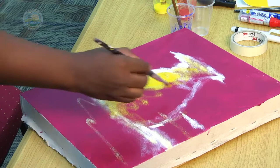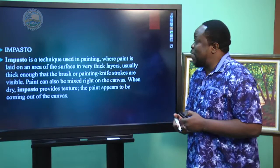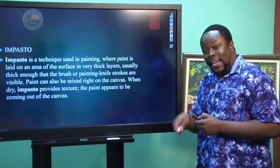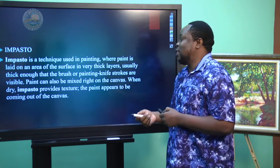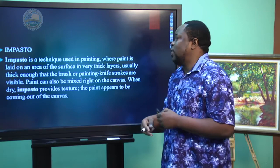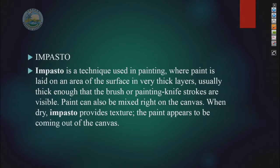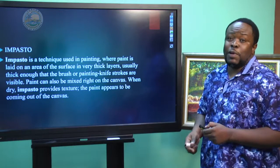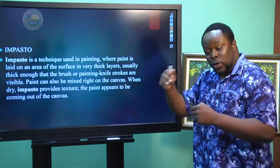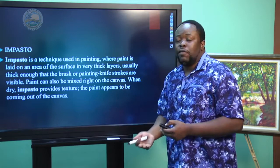Another technique is the impasto technique. Impasto means paste — you are actually pasting on the paint in a very unique way. Impasto is a technique where paint is layered on an area or surface in very thick layers, usually thick enough that the brush or palette knife strokes are visible. Paint can also be mixed right on the canvas, and when dry, the impasto provides texture — it's going to feel very rough. The paint appears to be coming out of the canvas and appears three-dimensional.